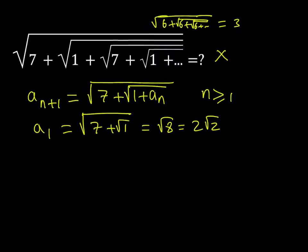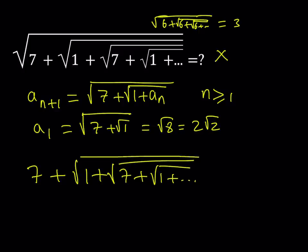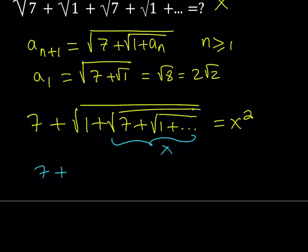So what happens if you set this whole thing equal to x? Then obviously the next step would be squaring both sides and getting 7 plus the square root of 1 plus the square root of 7 plus the square root of 1 plus dot dot dot. This equals x squared and you'll notice that this expression contains itself. So from here on we can just write it as 7 plus the square root of 1 plus x equals x squared.